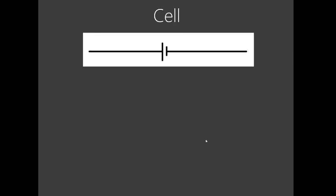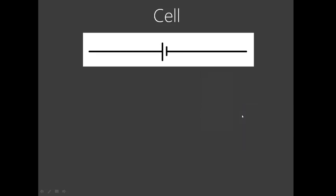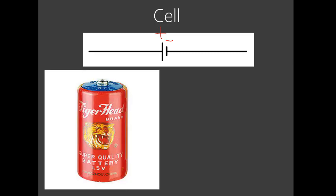And now we have cells. Everyone knows cells — dry cells, wet cells, different types of cells, as we shall explore in the later chapters of this part. A cell is represented in this way — we have two terminals. The longer one is the positive and the shorter one is the negative. Please mark that: the longer one is the positive, the shorter is the negative. You've seen these tiger-head batteries before — this is one cell, one dry cell.